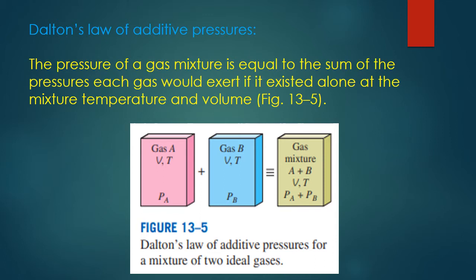Dalton's law of additive pressures states that the pressure of a gas mixture is equal to the sum of the pressures each gas would exert if it existed alone at the mixture temperature and volume (Figure 13-25). We have three identical containers: the first contains gas A, the second contains gas B, with pressures P_A and P_B respectively. When the two gases are combined into the third container, the resulting pressure is P_A + P_B.